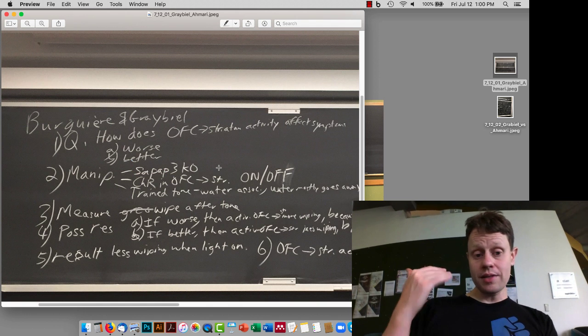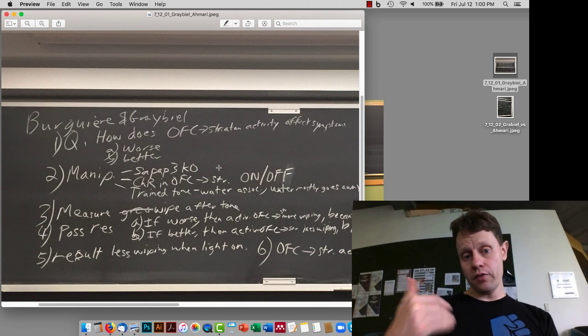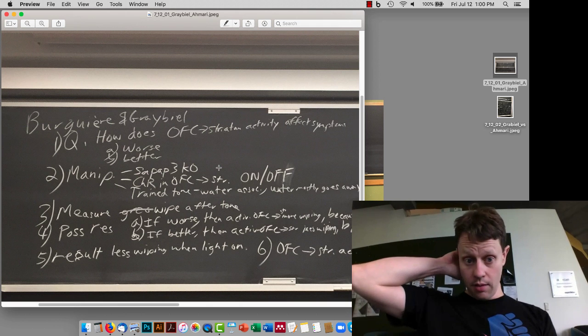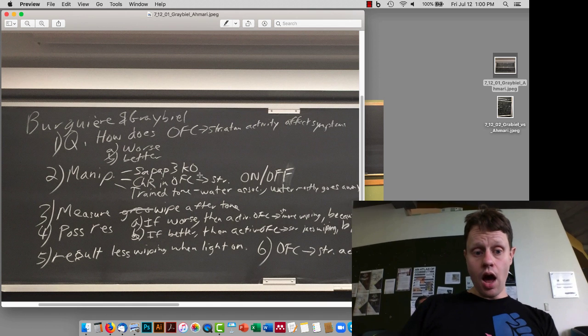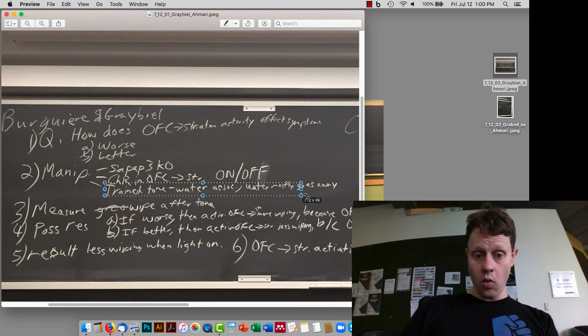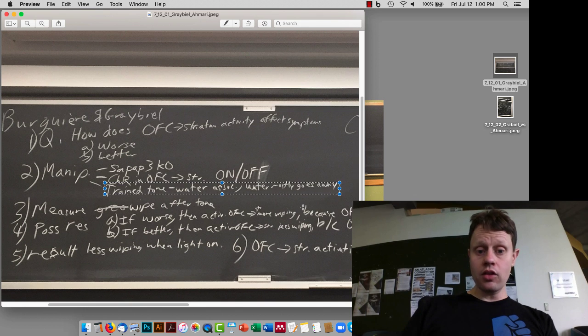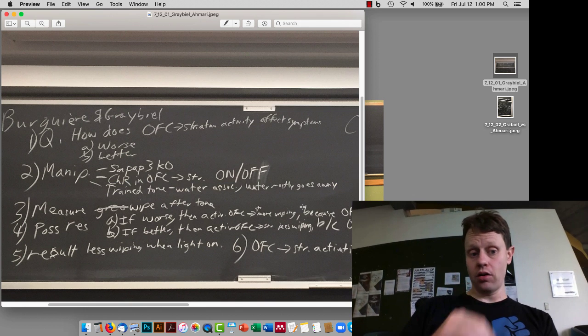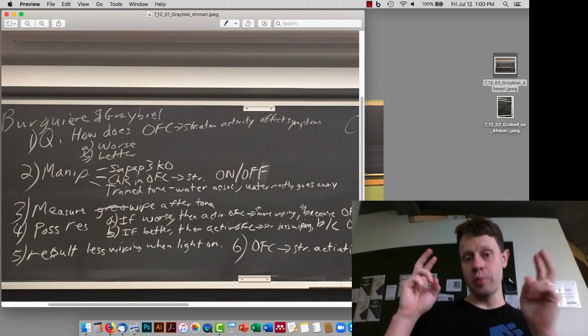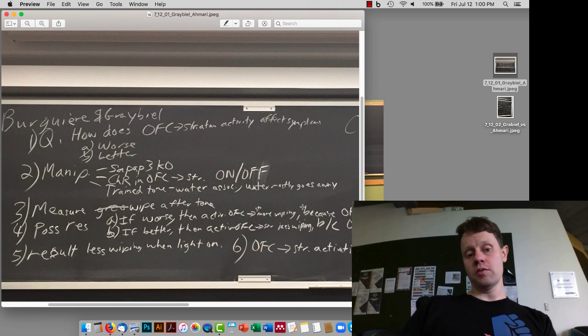These are the mice that are missing the SAPF3 gene and therefore have increased OCD-like symptoms. They train these mice to associate water with tone, and then they look when the water's 90% of the time not there, see if those mice still are in a sense obsessively thinking about and compulsively wiping when the tone shows up.